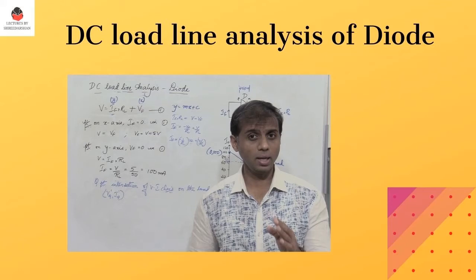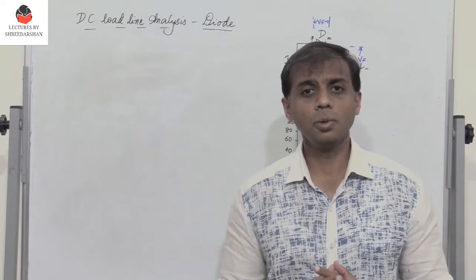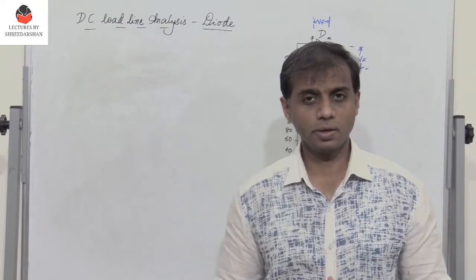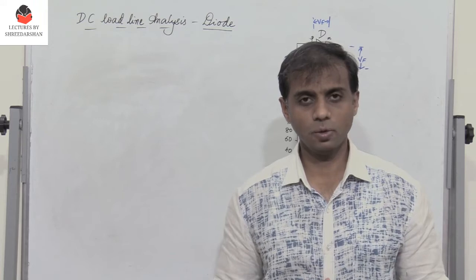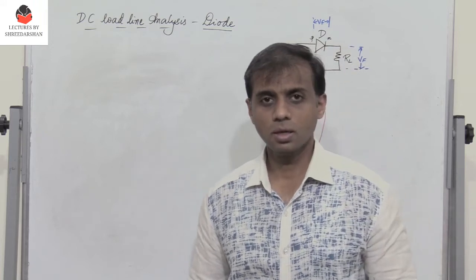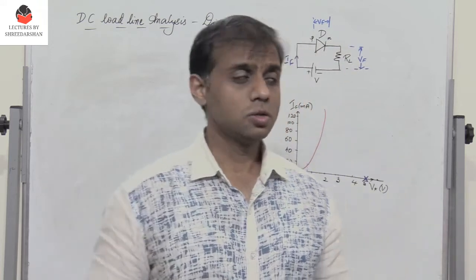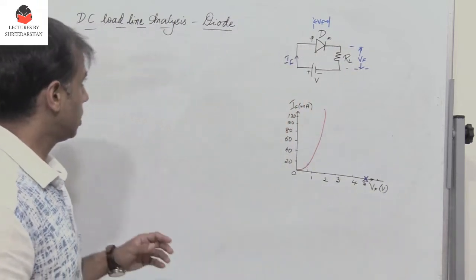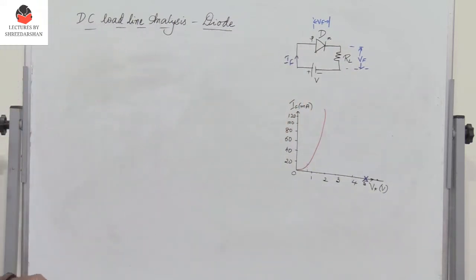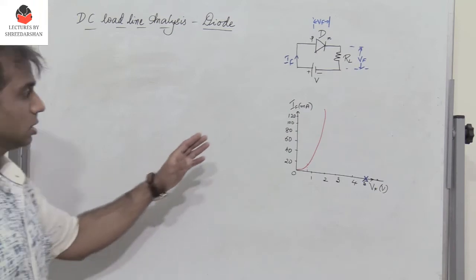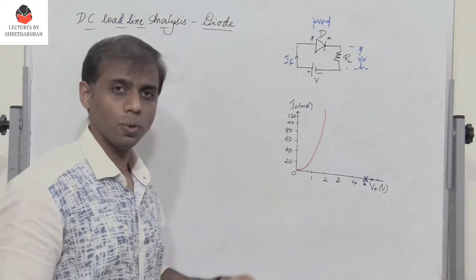Hello friends. After having understood the forward and reverse bias characteristics of a diode, let us try to draw the DC load line and give the Q point.